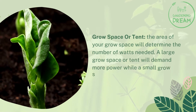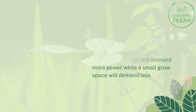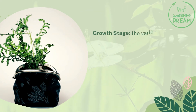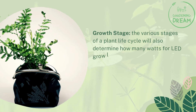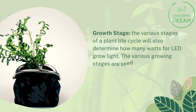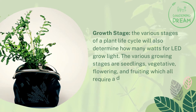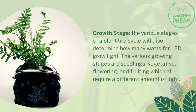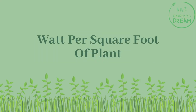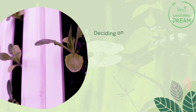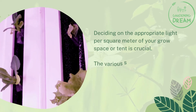A large grow space or tent will demand more power while a small grow space will demand less. Growth stage: the various stages of a plant's life cycle will also determine how many watts for LED grow light. The various growing stages are seedlings, vegetative, flowering, and fruiting, which all require a different amount of light.